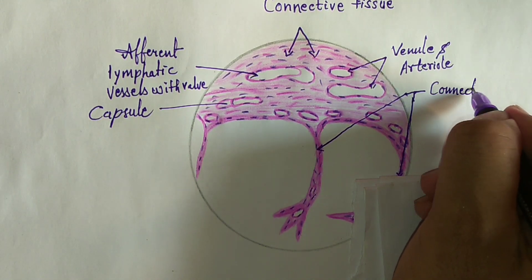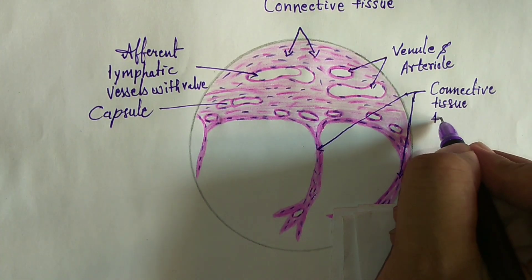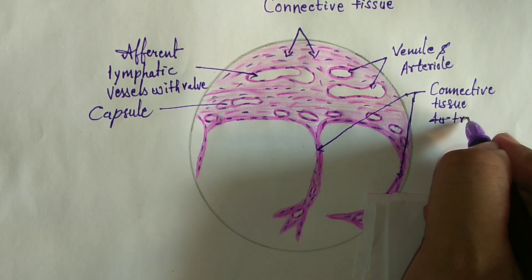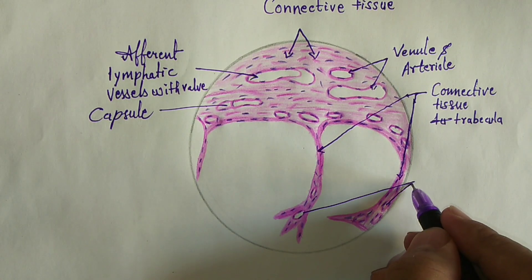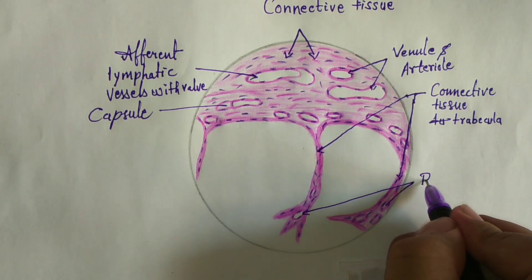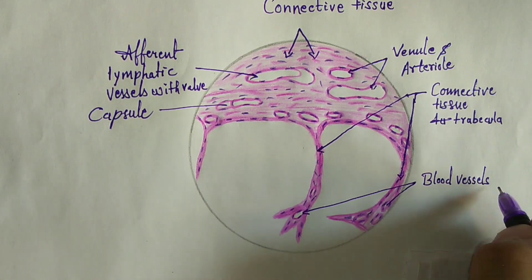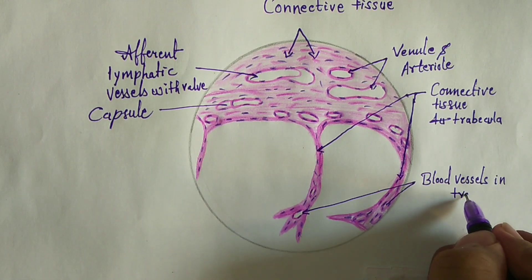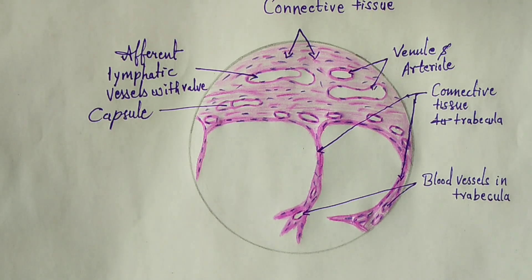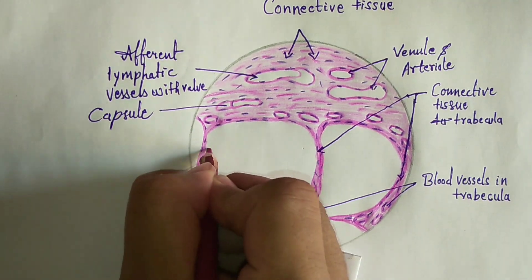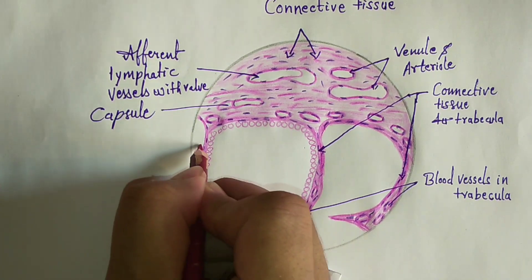Here we will label the connective tissue trabeculae. This is the structure of connective tissue trabeculae, and numerous blood vessels are present within the trabeculae.